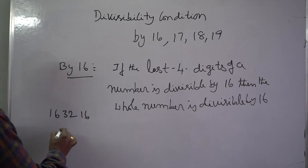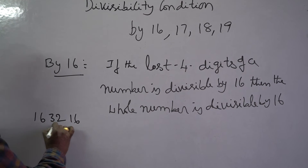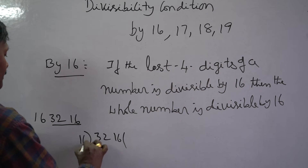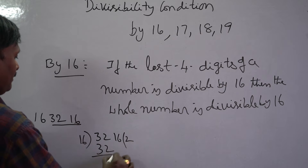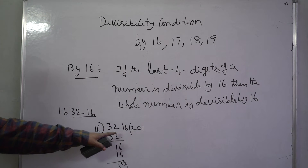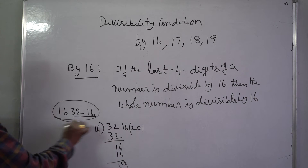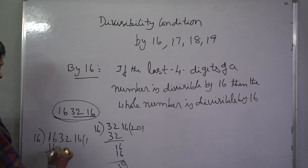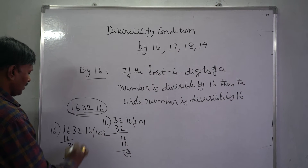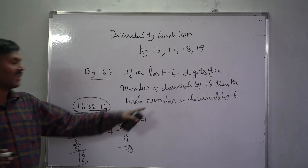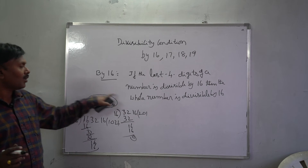See this example. We will check whether the last four digits of your number is divisible by 16 or not. So 3216 is divisible by 16, so the whole number is always divisible by 16. You can check it. It means that if the last four digits of your number is divisible by 16, then the whole number is divisible by 16.